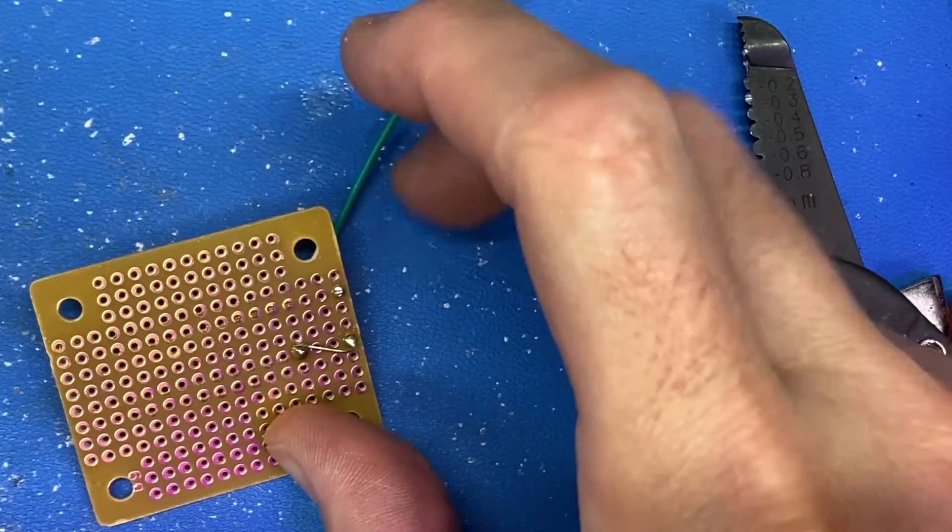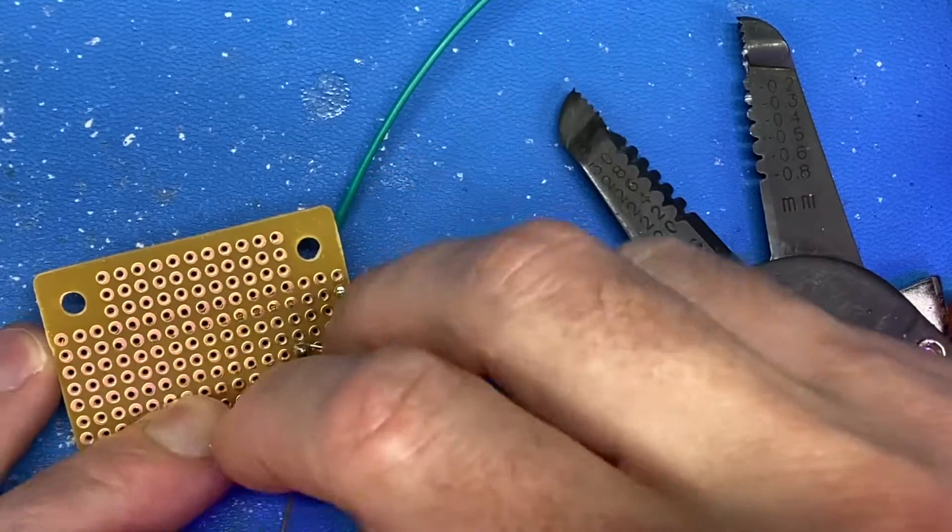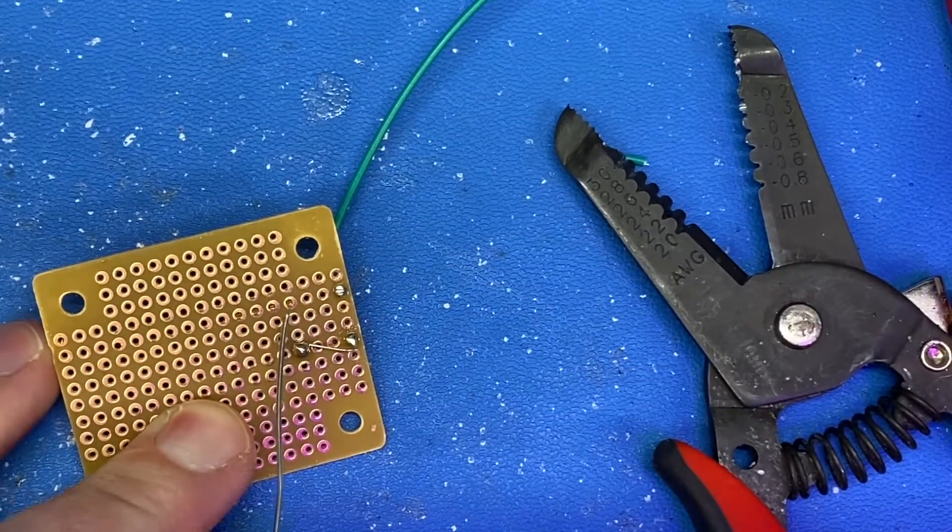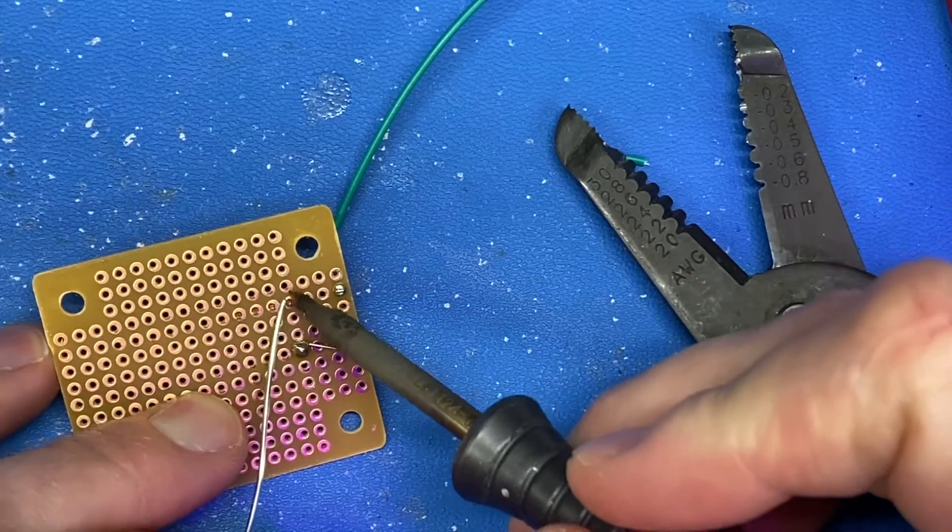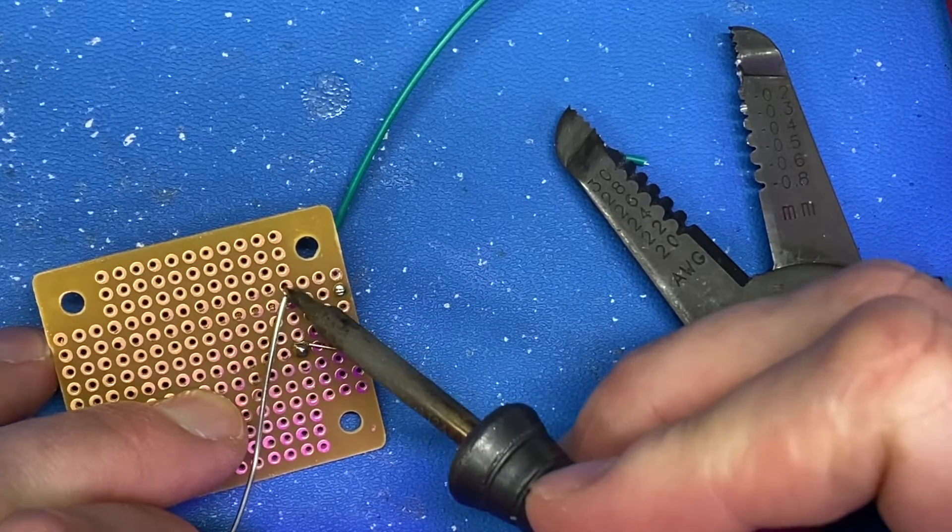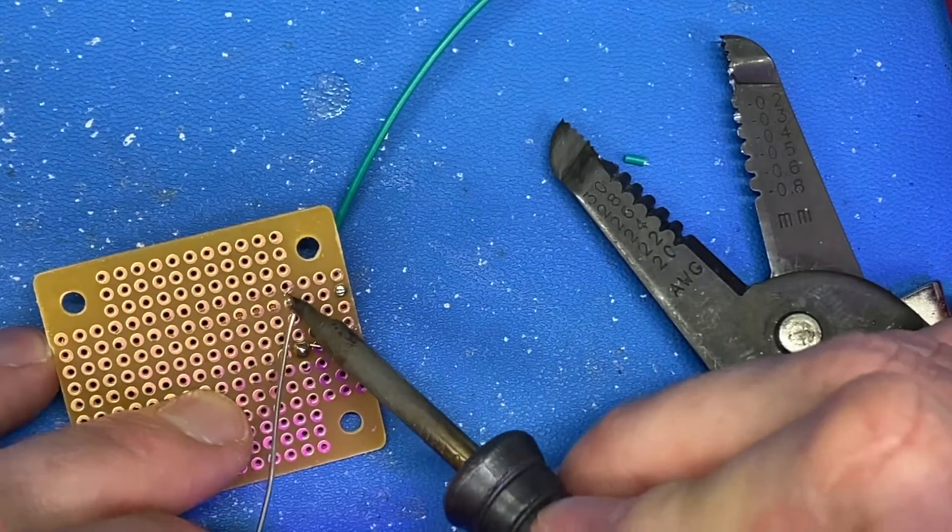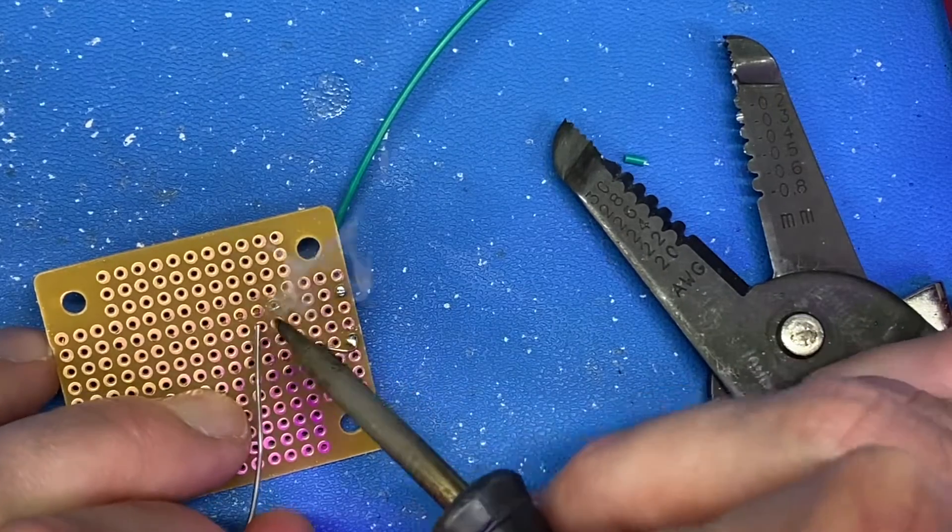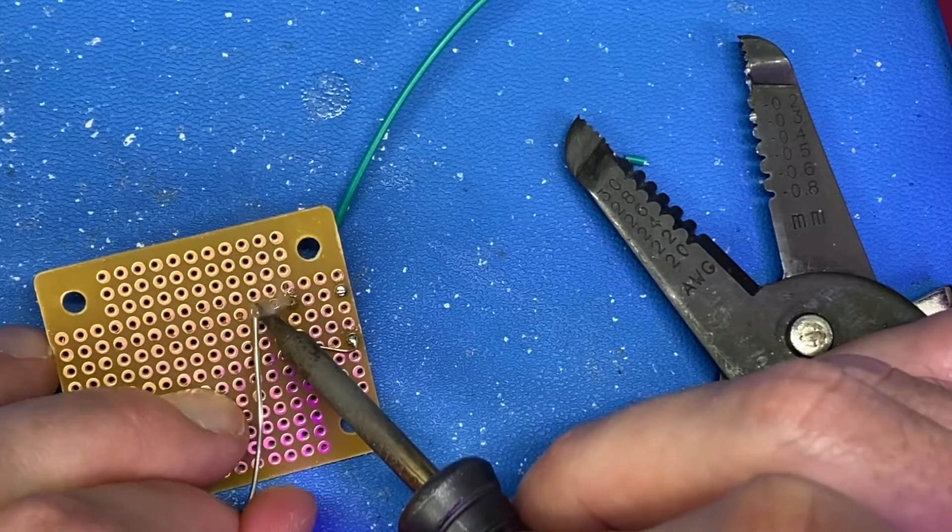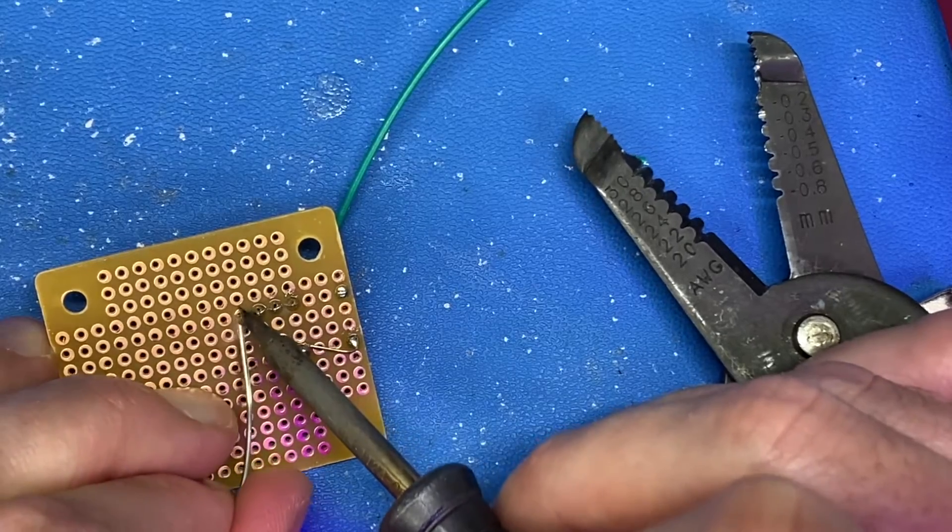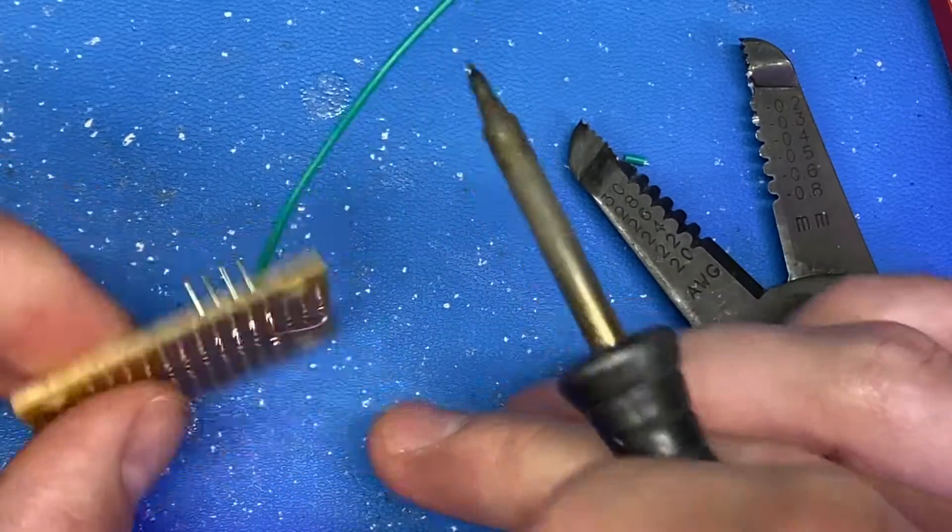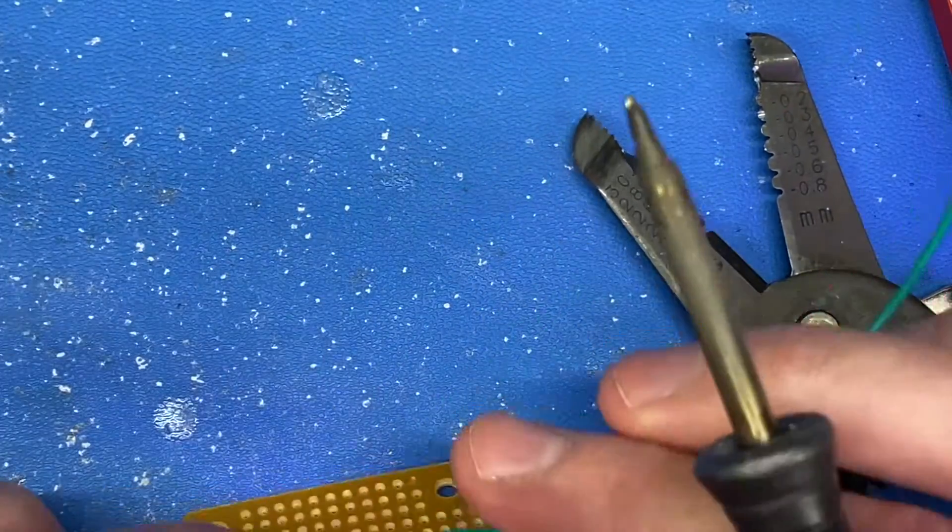And this blue backing on my workbench here is really nice because it's a soldering pad that both reduces electrostatic discharge. It dissipates any static, but also it's heat resistant, so I can put these pins on it and it's not going to melt through it.